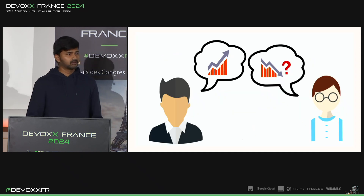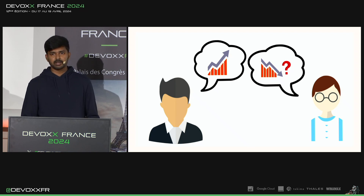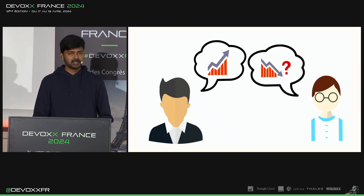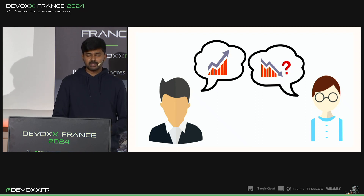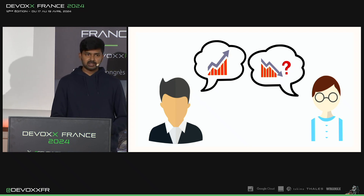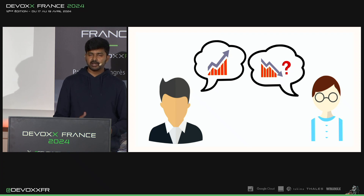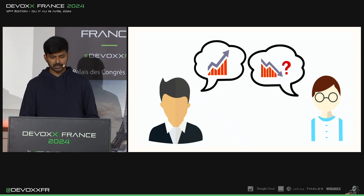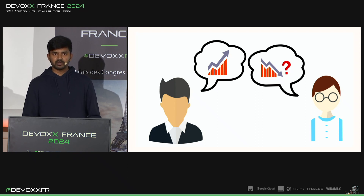The main issue we faced was having clear communication between the author and the reviewer. A comment can be of any type — it can be a suggestion, an issue, a question, or a thought. Understanding the type of comment is very important. When the author understands the type of comment left by the reviewer, only then can he decide what action he needs to take to resolve the comment and then merge the PR.